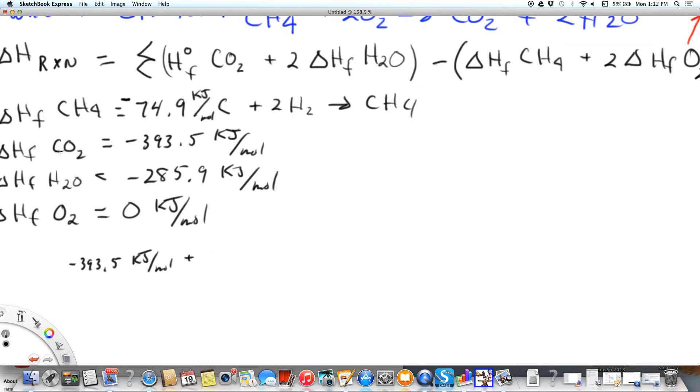That's for CO2 plus two times minus 285.9 kilojoules per mole. That's water. So we're going to add those two together. Even though they're negative, we're adding them together. And now we're going to subtract methane. We look over here at methane, it's minus, so we're subtracting a minus 74.9 kilojoules per mole, times one of course. And then we're going to subtract, because we're subtracting the reactants, two times oxygen, which is zero kilojoules per mole.